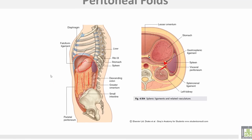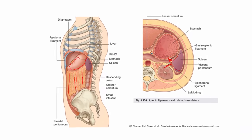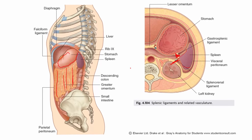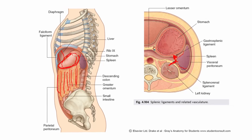This section showing a transverse section of the abdomen and a longitudinal section showing the stomach, the greater omentum, and the lesser omentum. This is the spleen, the kidney, this is the gastro-splenic ligament, and this is the lienorenal ligament.